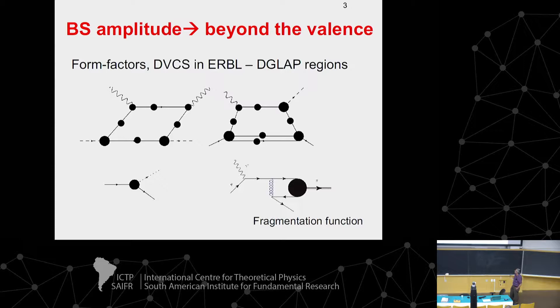For example, the nucleon case — we have here the Bethe-Salpeter amplitude for three bodies. Once we know this Bethe-Salpeter amplitude, we can get the fragmentation function and so on. There are models based on assumptions, for example, that compute these quantities, but we could build them knowing the Bethe-Salpeter amplitude in Minkowski space.